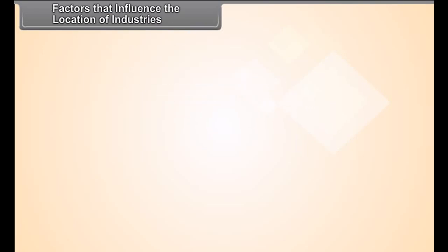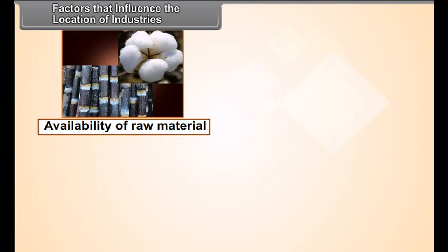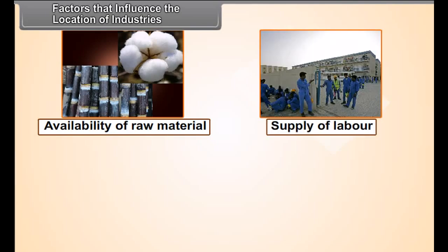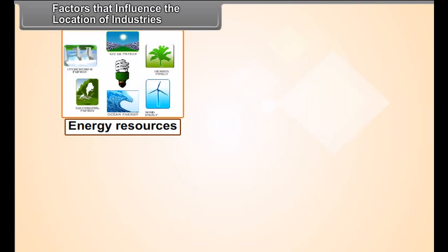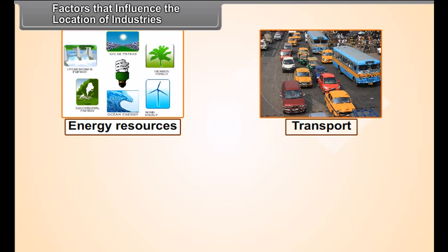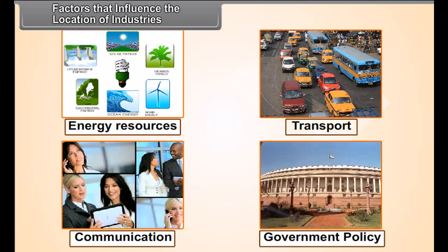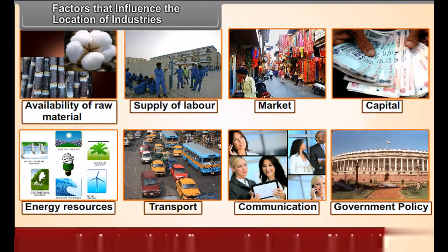Factors that influence the location of industries: availability of raw material, supply of labor, market, capital, energy resources, as well as facilities of transport and communication, and government policy are the factors that influence the location of industries.